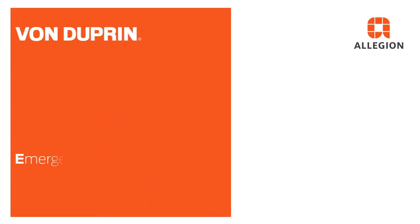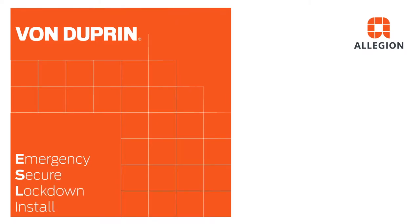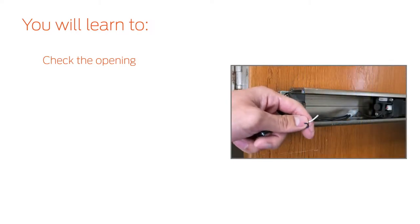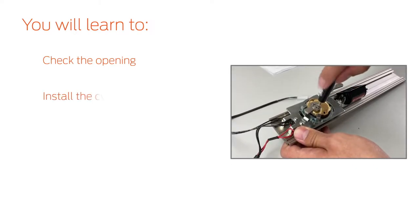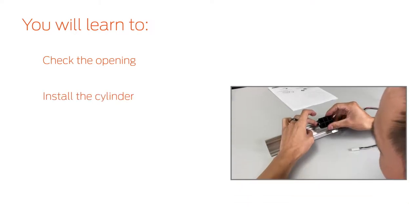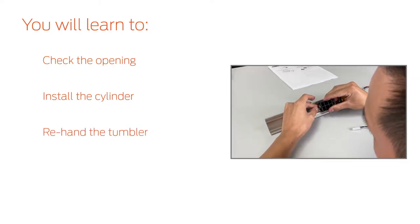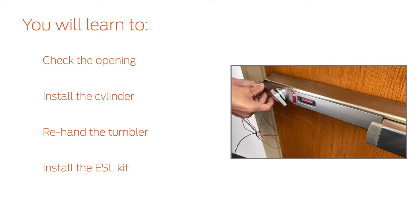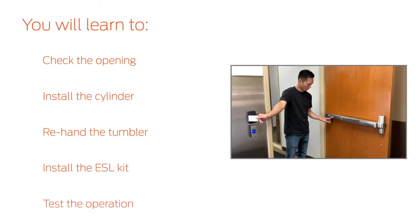In this video, we will demonstrate how to install the Von Dupren Emergency Secure Lockdown Solution. After watching this video, you will be able to check that the opening is ready for ESL, install the mortise cylinder, re-hand the tumbler if necessary, install the ESL kit, and test the operation.